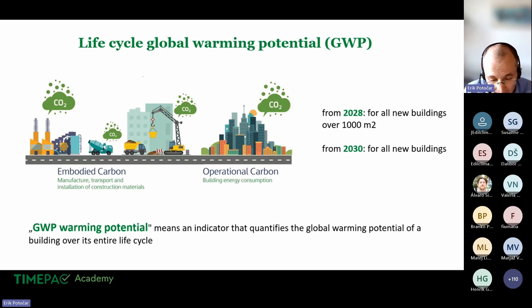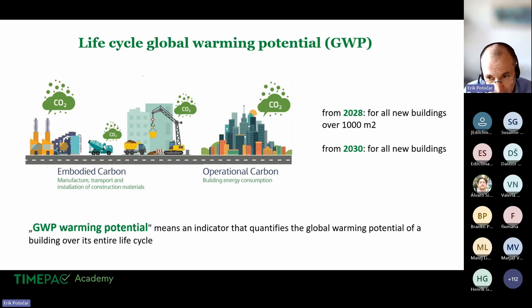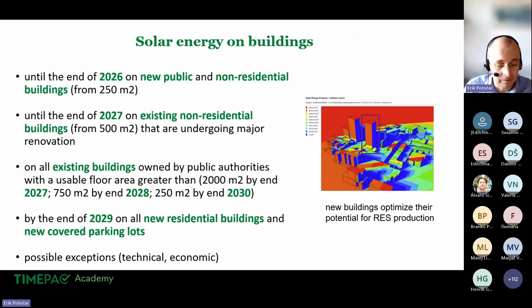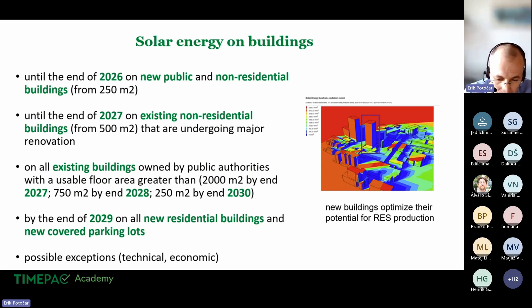The life cycle global warming potential will be obligatory to disclose in the energy performance certificate from 1 January 2028 for new buildings larger than 1,000 square meters, and after 2030 for all new buildings.